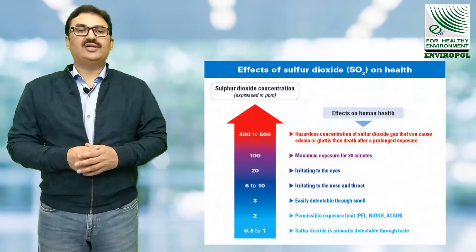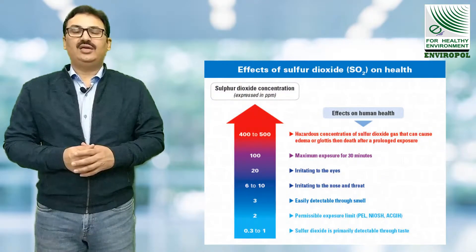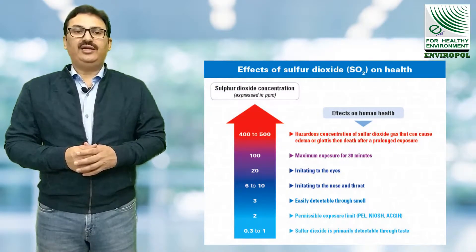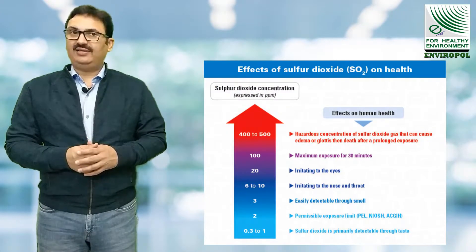SO₂ emissions are found mainly in the exhaust flue gases of fossil fuel-fired power plants. SO₂ emissions have a series of health hazards such as irritation of skin,